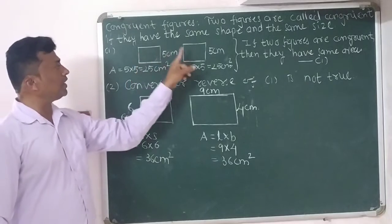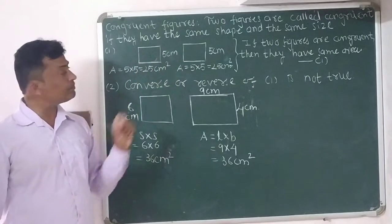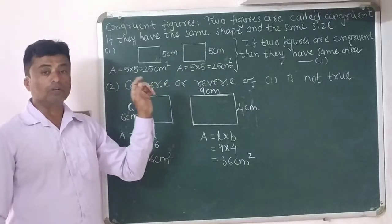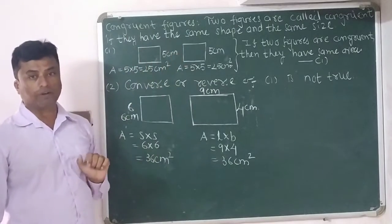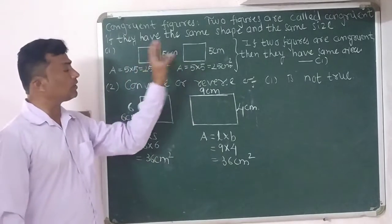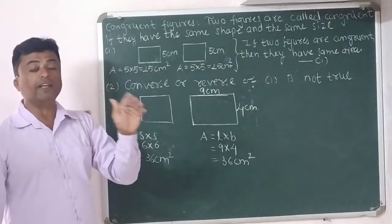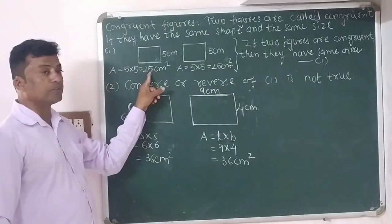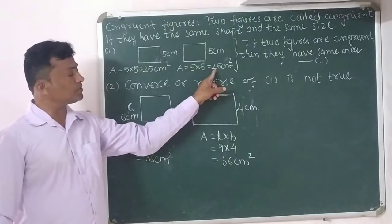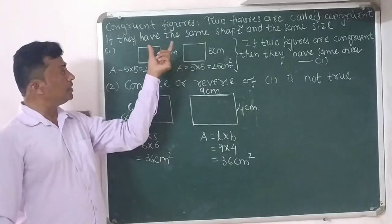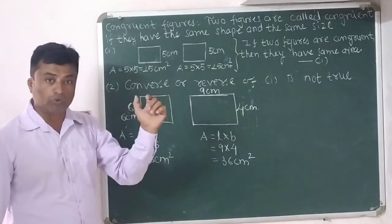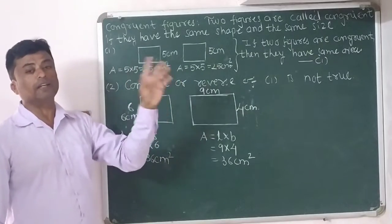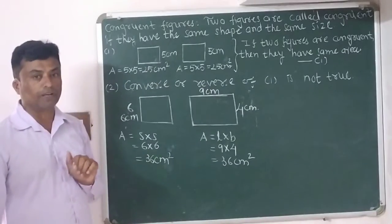For example, square one and square two both have the same side length of 5 centimeters. So they are congruent figures and their area is also the same — both have area 25 centimeter square. Both squares are congruent to each other and they have the same area of 25 centimeter square.